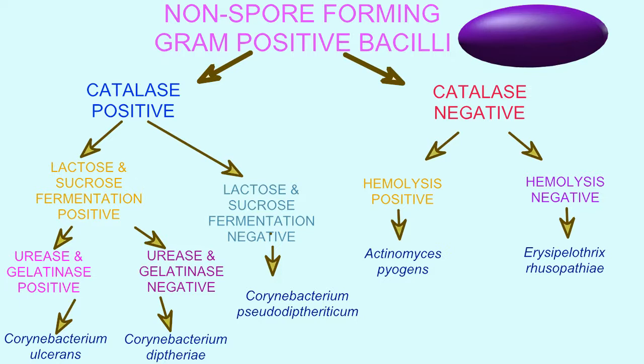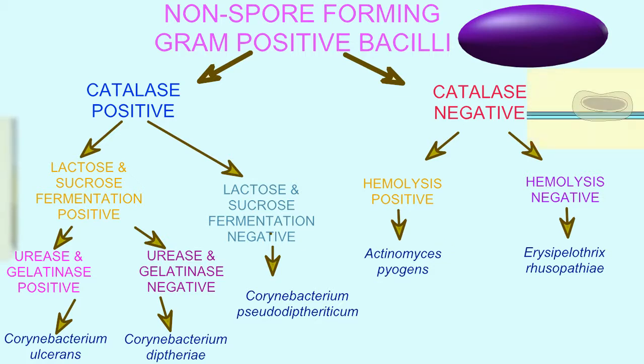One could examine the shape of the cells and distinguish between the bacillus shape, which is rod-shaped, versus the round coccus shape. If a second test to see whether spores are formed turns out to be negative, with no spores, then one could use this chart to distinguish between a number of bacteria.